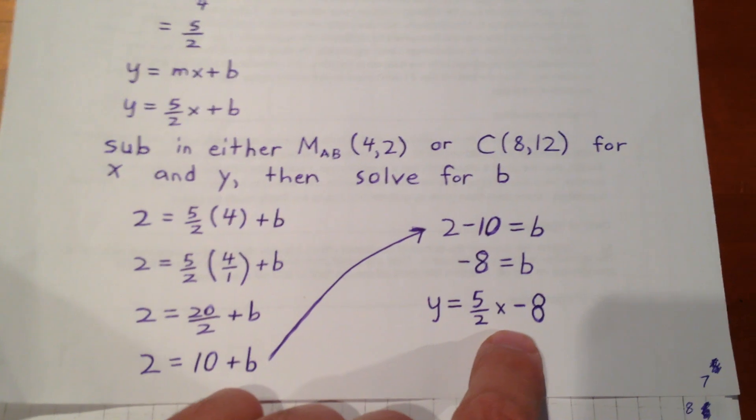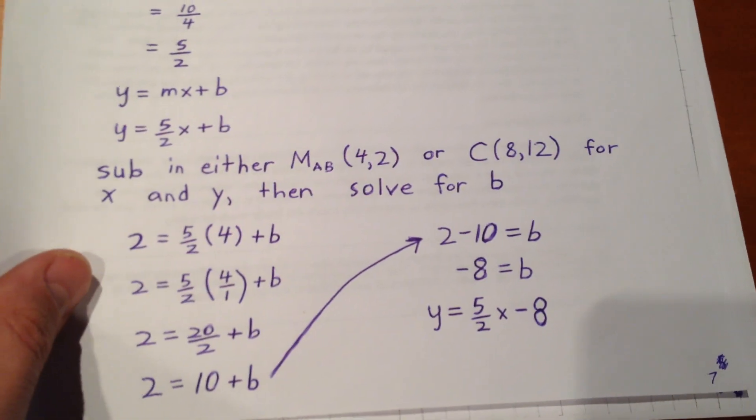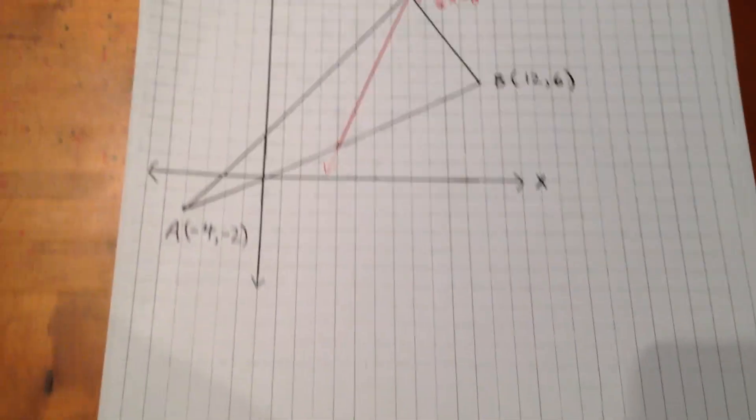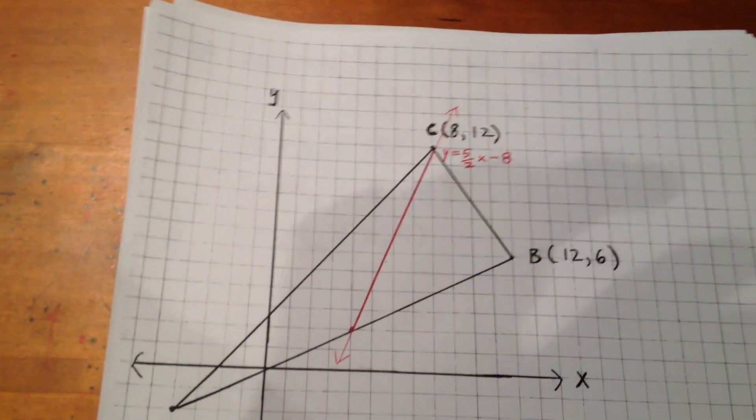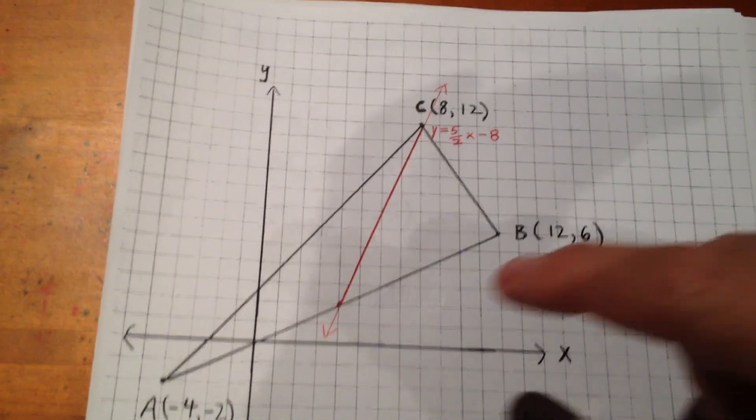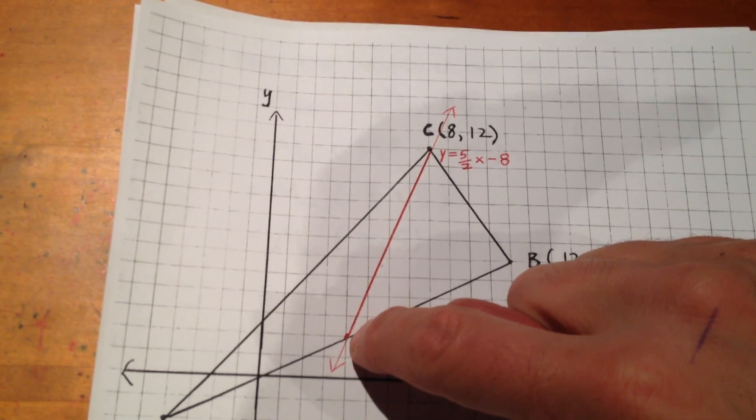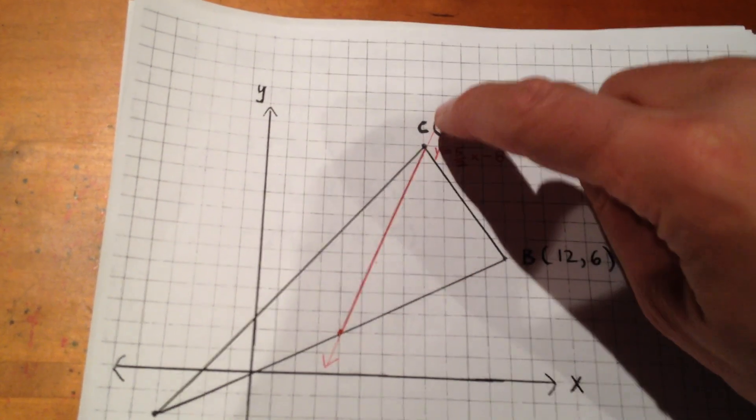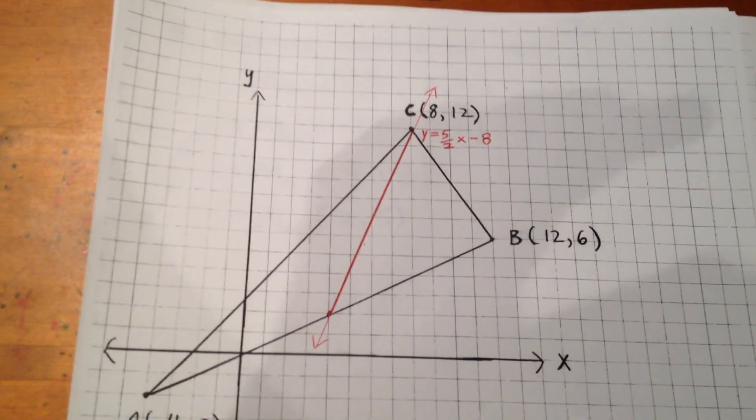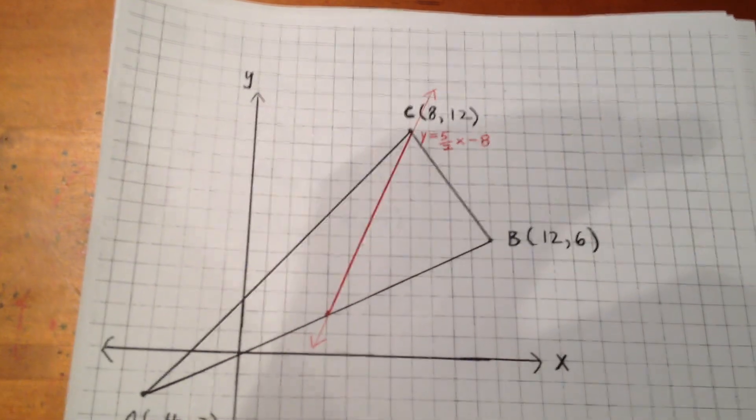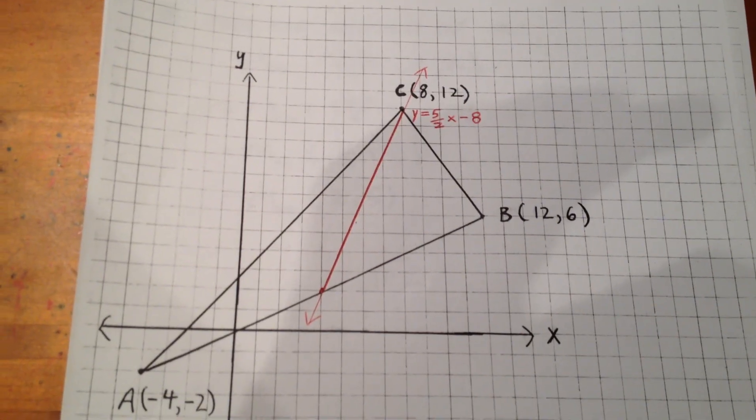And the equation of our first median is y equals 5 halves x minus 8. Looking at that on a straight line, we see that we have a median going from the midpoint of 4, 2 to the far vertex of 8, 12. And we've determined the equation of that line to be y equals 5 halves x minus 8.